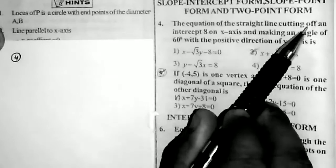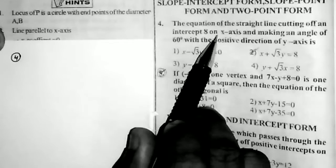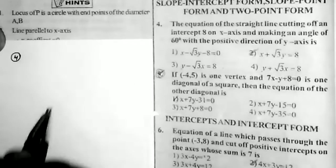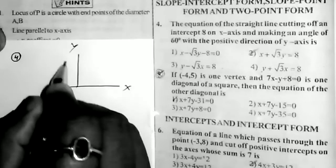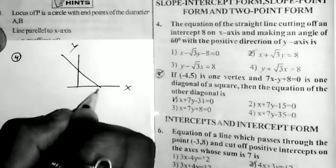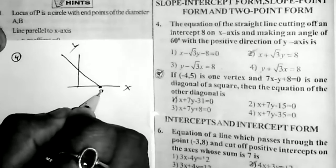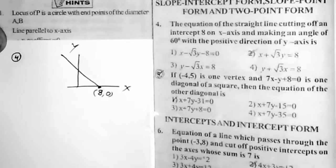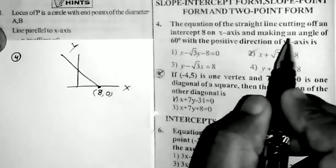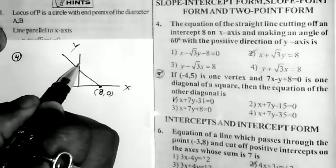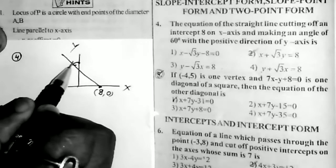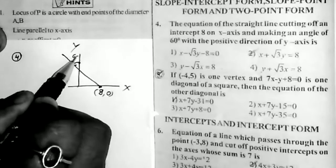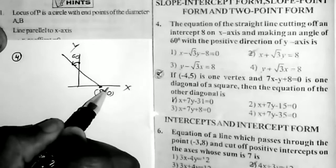Sum number 4: find the equation of the straight line cutting off an intercept of 8 on the x-axis and making an angle of 60 degrees with the positive direction of the y-axis. An intercept of 8 on the x-axis means the point is (8, 0). The line makes an angle of 60 degrees with the positive direction of the y-axis, so the angle with the x-axis is 90 + 60 = 150 degrees.